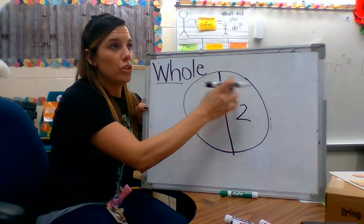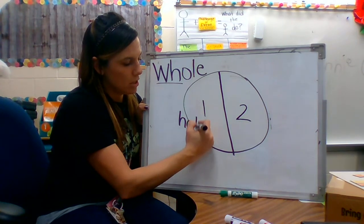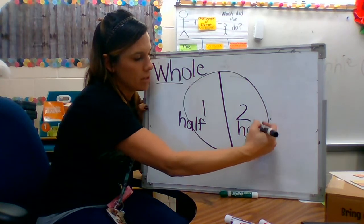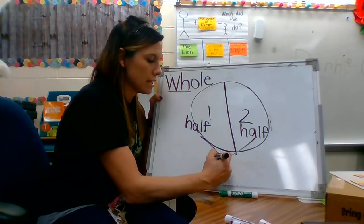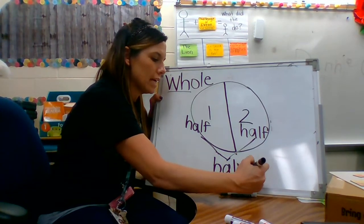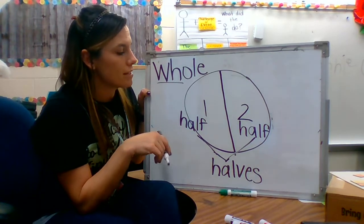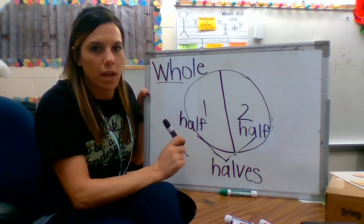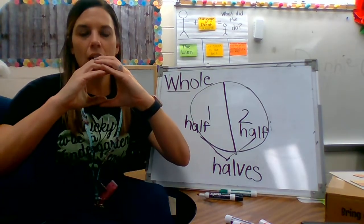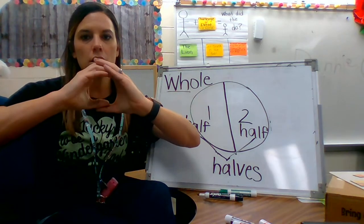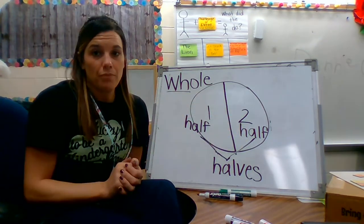So the two parts of this cookie are called halves. We have half and half, and that gives us halves. My cookie is divided into halves. Whenever you hear somebody say that their shape is divided into halves, that means there are two equal parts. Halves equals two equal parts. They have to be equal to be considered halves.